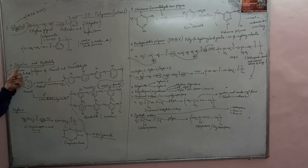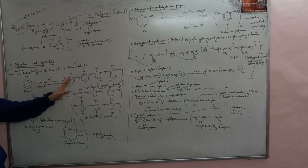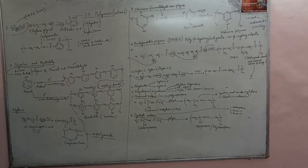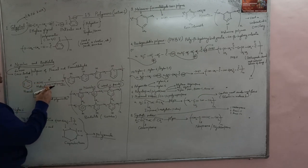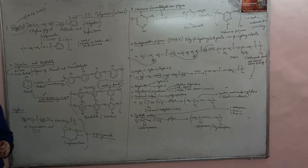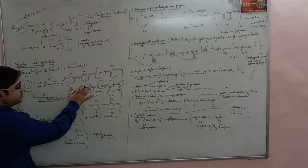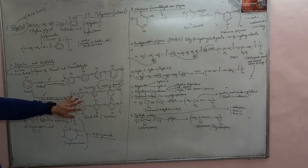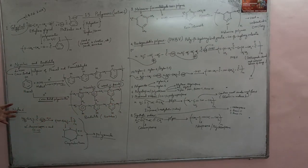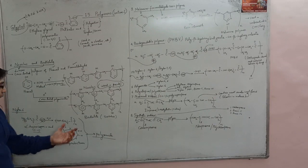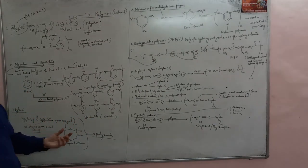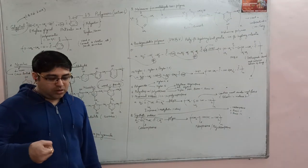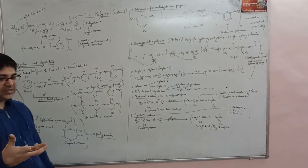If instead of linear polymerization I perform cross-link polymerization of phenol and formaldehyde, I get a three-dimensional structure called bakelite. Bakelite has an infusible mass — we will study that in lecture three. Bakelite is used in electrical switches and in the handles of utensils.